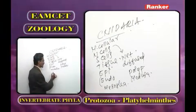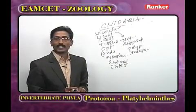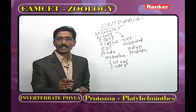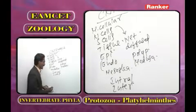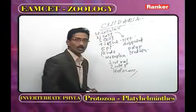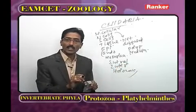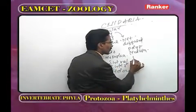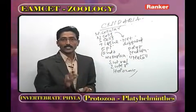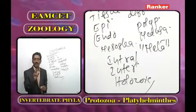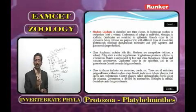In Cnidaria, both intracellular and extracellular digestion are present. Animals take solid food — holozoic nutrition. The polyp and medusa undergo alternation of generations called metagenesis. If only one zooid is present, it is monomorphism; two zooids is dimorphism; many zooids is polymorphism.